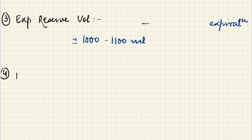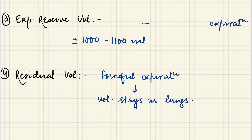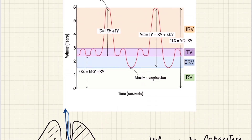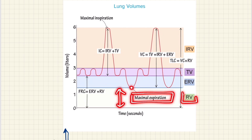The fourth and last volume is the residual volume. As the name suggests, it is the volume that remains as residue in the lungs even after a forceful expiration. After a forceful expiration, the tidal volume comes out first, then the expiratory reserve volume that was stored as reserve. But there is still a residual volume that will remain in the lungs even after this forceful expiration — it stays in the lungs. This is the residual volume, approximately equal to 1100 to 1200 ml. This air cannot be expired — it is the point of maximum expiration.